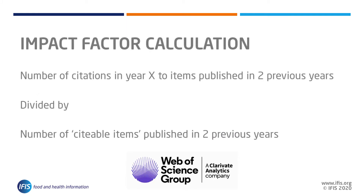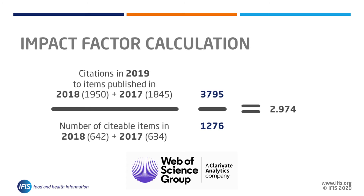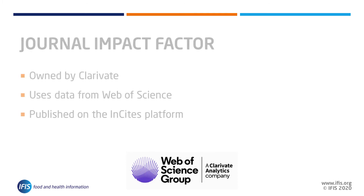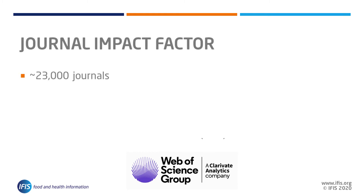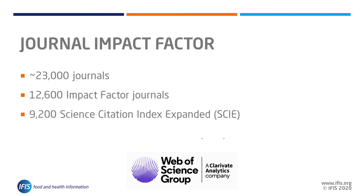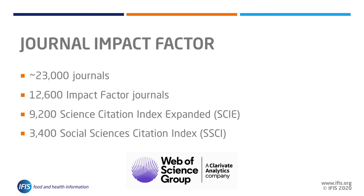Now we'll look at two key metrics: Clarivate's Journal Citation Reports Impact Factor and Scopus's CiteScore. The Impact Factor is calculated as follows: the number of citations in the year of interest to articles published in the two previous years, divided by the number of articles published in those two previous years. For example, a 2019 Impact Factor of 2.974 is an average of the 3,795 citations received in 2019 to the 1,276 papers published in 2017 and 2018. The data for Impact Factors is drawn from the Web of Science, owned by Clarivate Analytics. Impact Factors are released annually in the Journal Citation Reports platform. As of 2019, Clarivate's Web of Science contains nearly 23,000 journals, but only 12,600 of these have Impact Factors — 9,200 in the Science Citation Index and 3,400 in the Social Sciences Index.